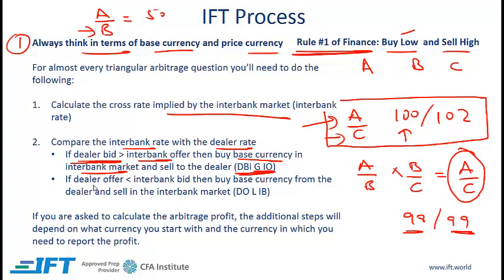The other scenario where you have an arbitrage opportunity is if the dealer offer is less than the interbank bid. In this case, again you buy low and sell high: you buy the base currency from the dealer because this is low, and sell in the interbank market because the interbank rate is high. You remember this using the acronym DOLEB: Dealer Offer Less than interbank Bid.